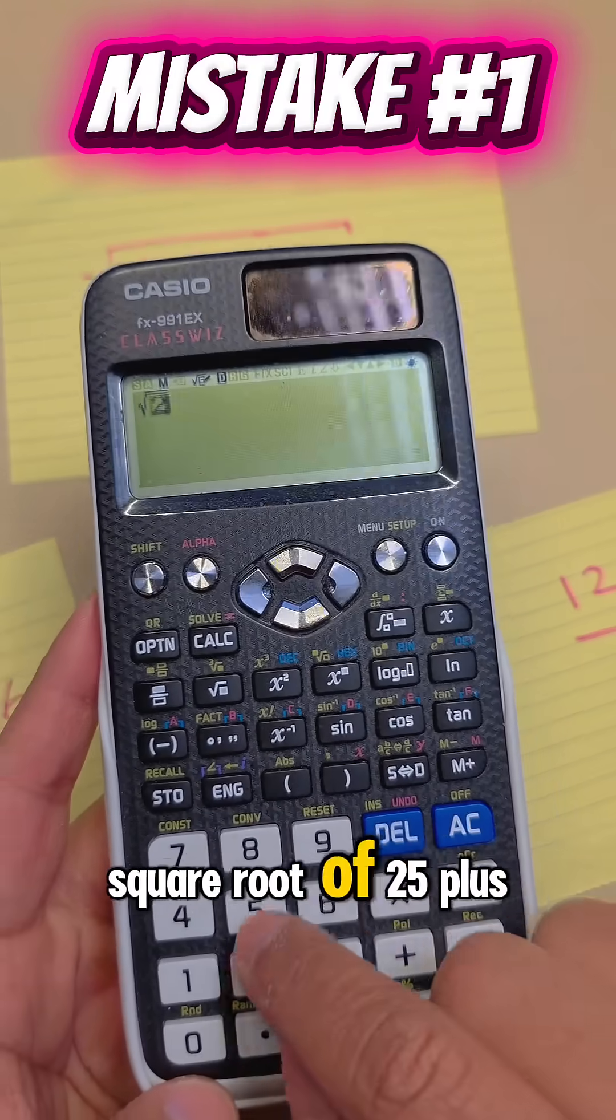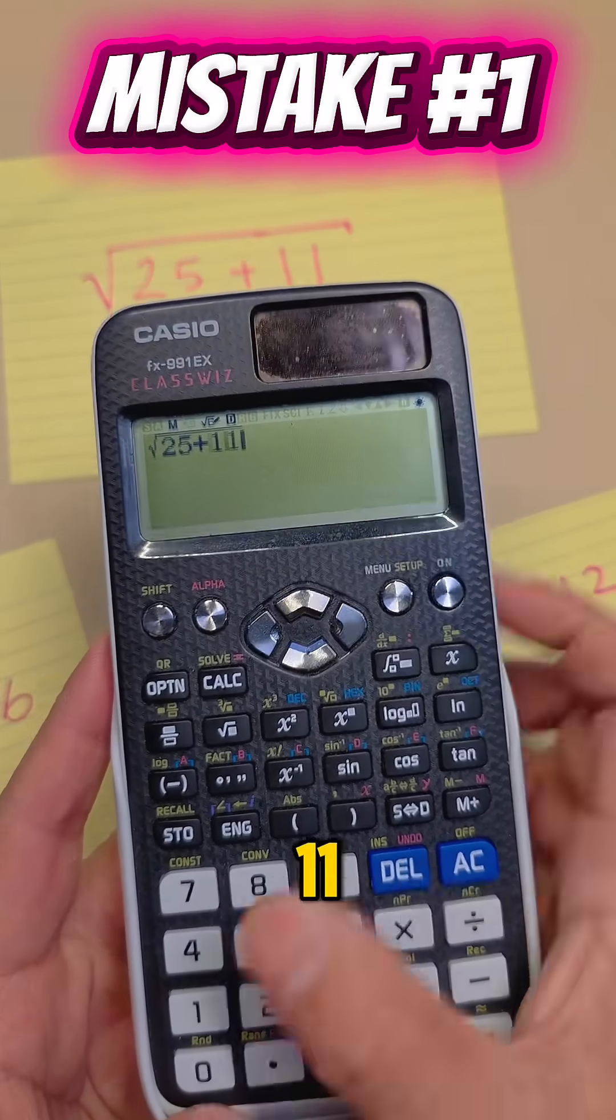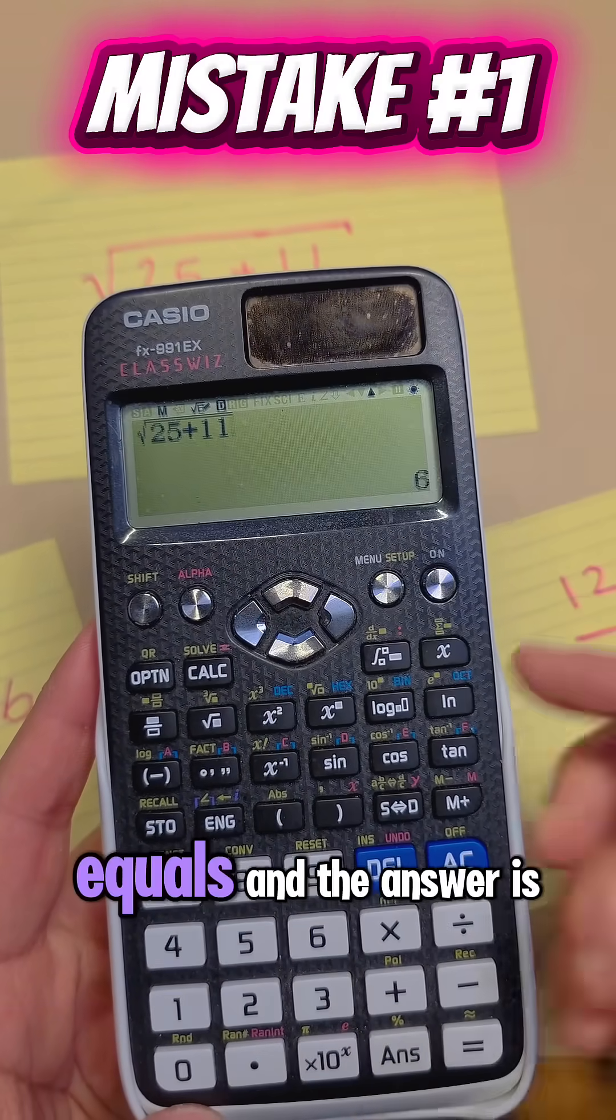What you should be doing is like this: square root of 25 plus 11. It needs to be underneath and then you can press equals and the answer is 6.